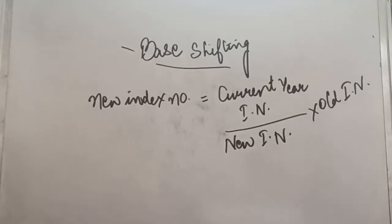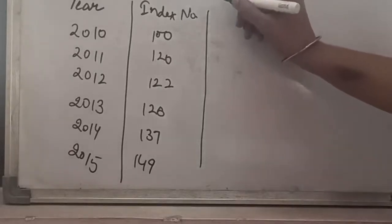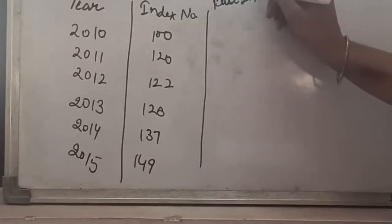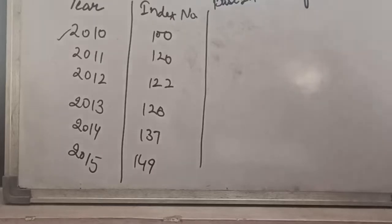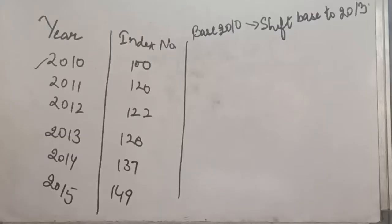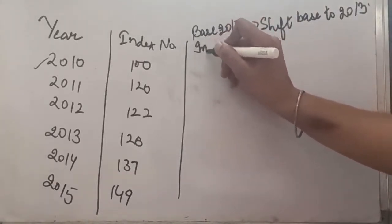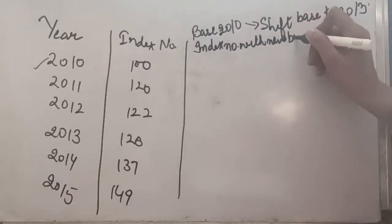Now let us see the example. Year-wise index numbers from 2010 to 2015 have been given, with the current data based on base year 2010. We have to shift the base from 2010 to 2013. Applying the base-shifting formula, a new index number will be calculated with the new base year 2013.